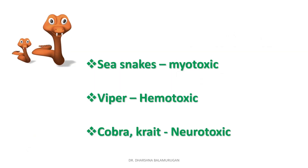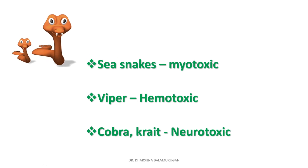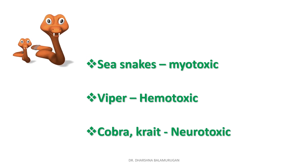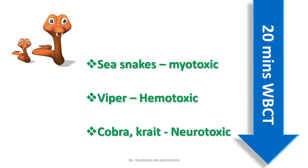Next, important points about snakes: sea snakes are myotoxic. Viper snake produces hemotoxic venom. Cobra and krait are neurotoxic — remember 'C C for neurotoxic': cobra and krait. The recommended test in snake poisoning is the 20-minute whole blood clotting test.